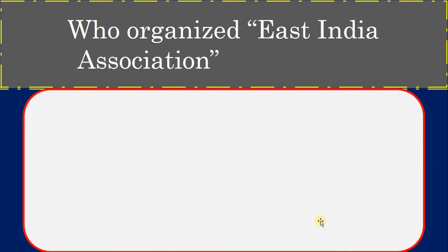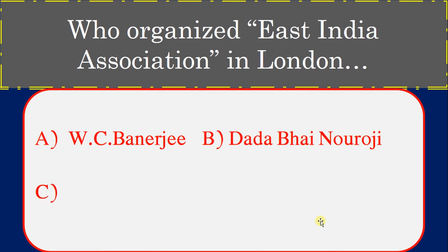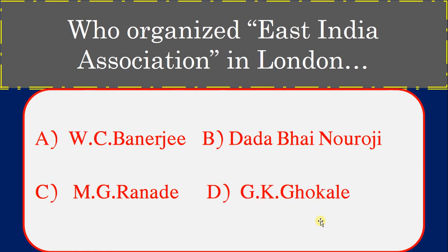Who organized the East India Association in London? Options: W.C. Banerji, Dadabhai Naoroji, M.G. Ranade, G.K. Gokhale. Correct answer: Dadabhai Naoroji.